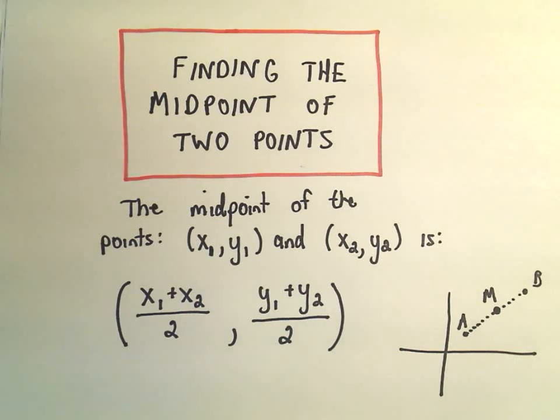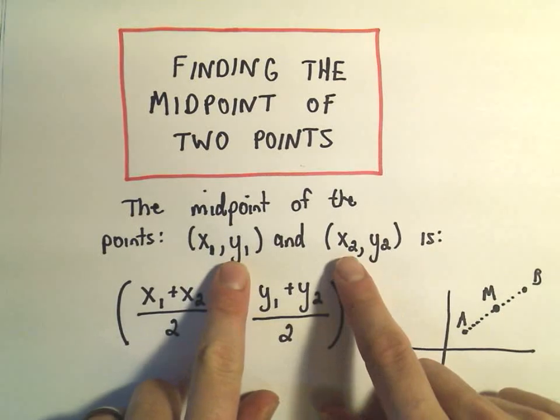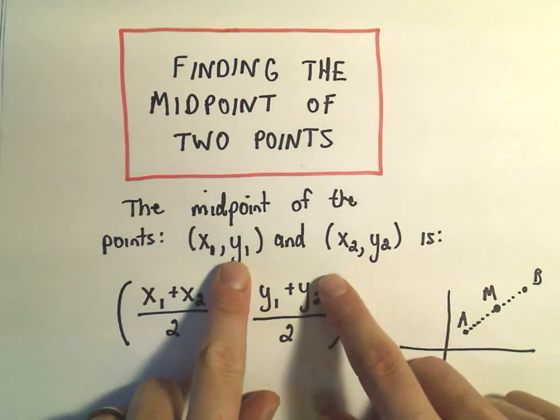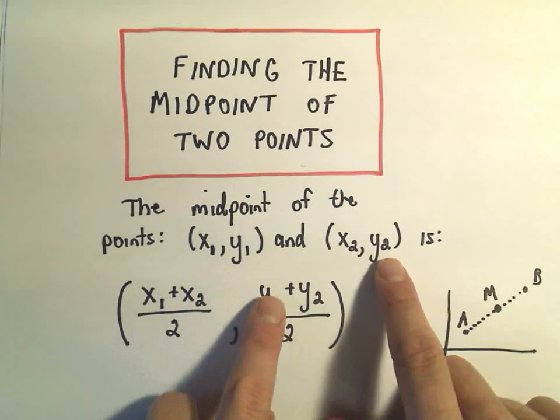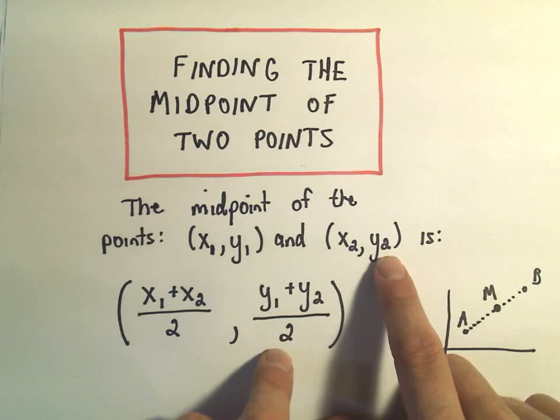Alright, in this video I just want to do an example of finding the midpoint between two points. The basic idea is if you want to find the midpoint between x1, y1 and some other point, x2, y2, we basically add the x coordinates together, divide by 2, add the y coordinates together, divide by 2.